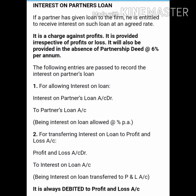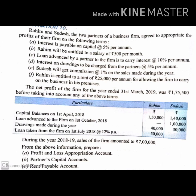Now we have a practical question. We will solve this problem in the practical question. Let us look at the practical question. So let us start the practical question. Rahim and Sudesh are the two partners of a business firm and they agreed to appropriate the profits of their firm on the following terms.